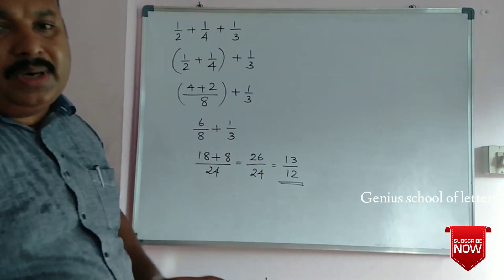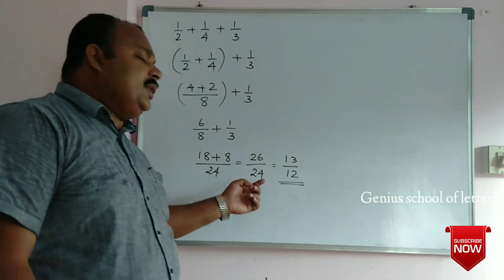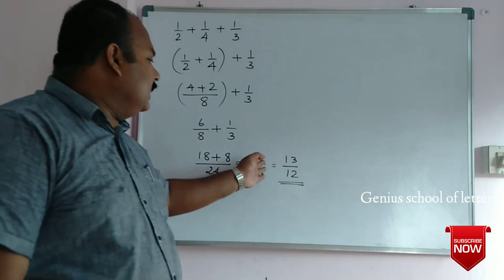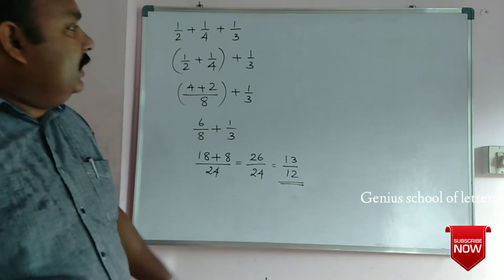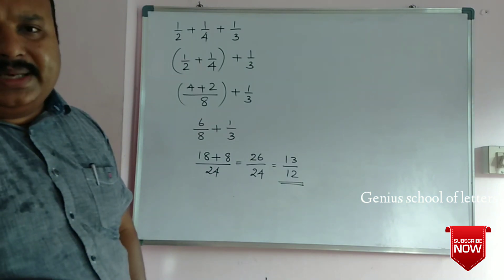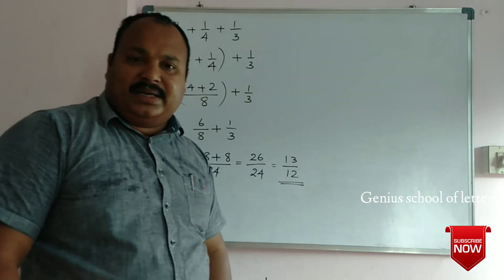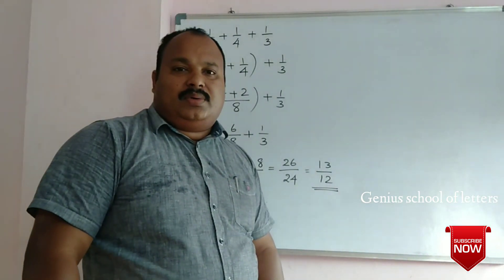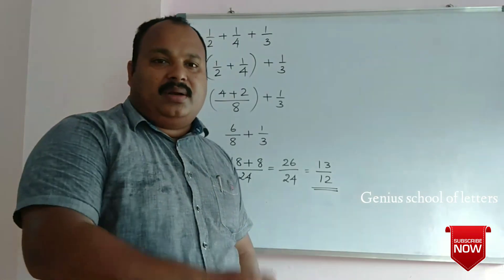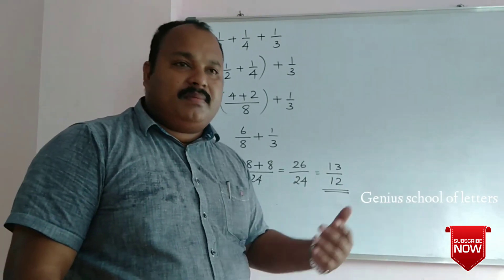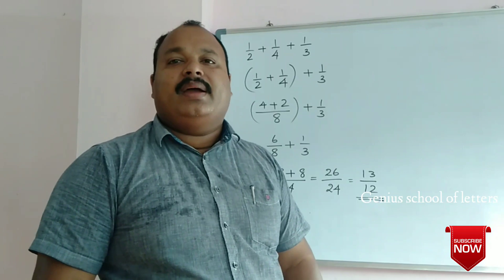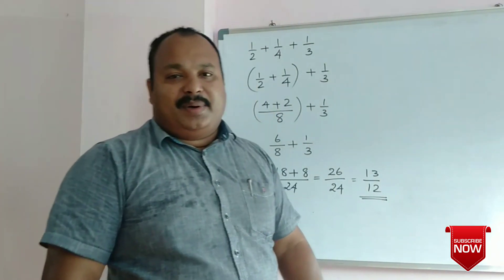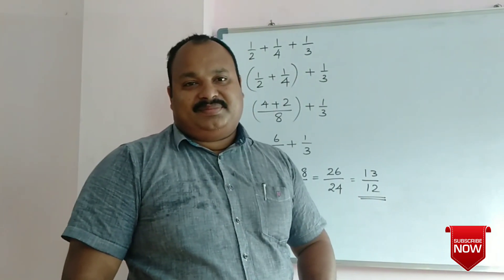LCM means the lowest common multiple. LCM is essentially used when adding fractions by finding a common denominator. Thank you very much for joining us today. Please like and share. Thank you.